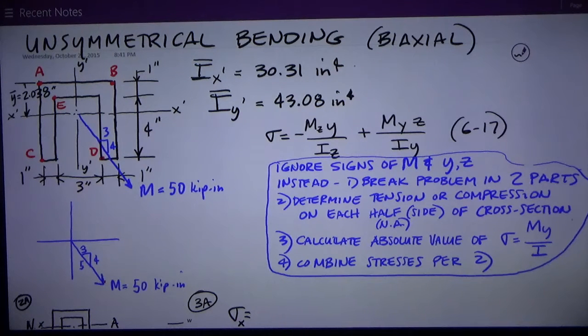On this section we're applying this moment of 50 kip-inches, and it is acting down to the right at a 3-4-5 slope. It's just a vector, so that gives it an Mx component and an My component.